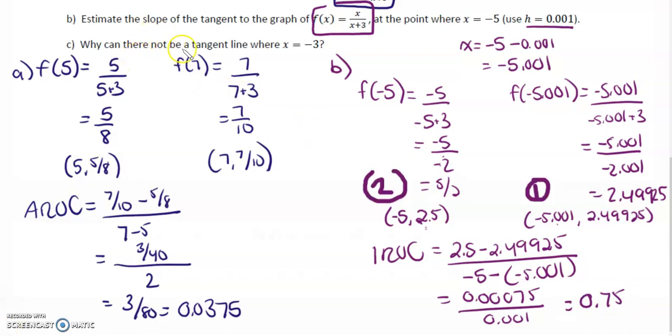Part c: Why can there not be a tangent line where x equals negative 3? If you look at x equals negative 3, there is a vertical asymptote at x equals negative 3. So the graph is not defined at that point.